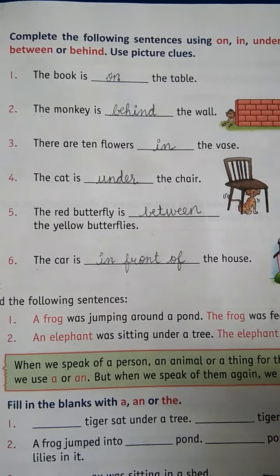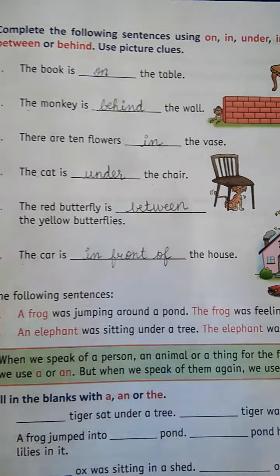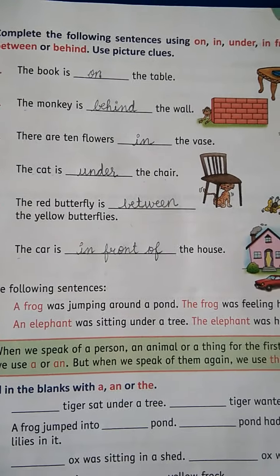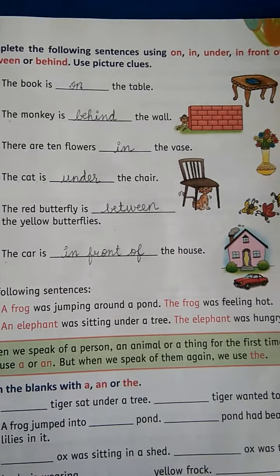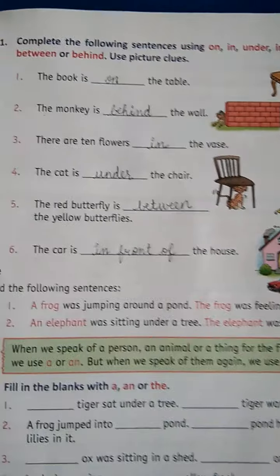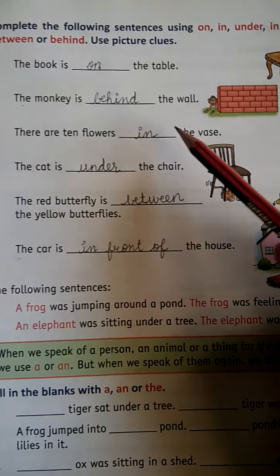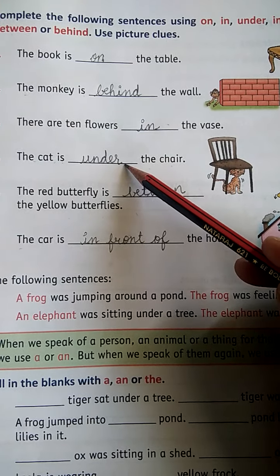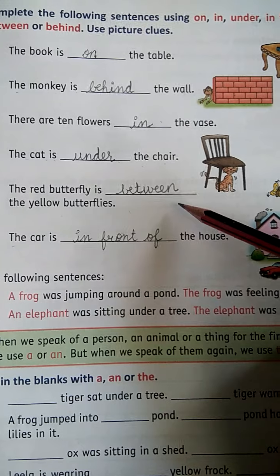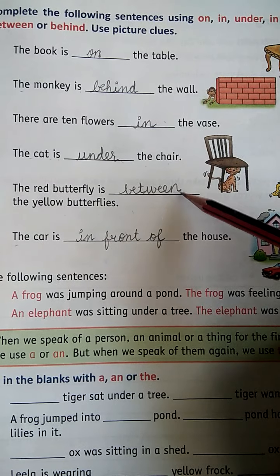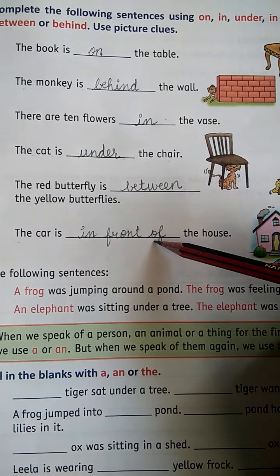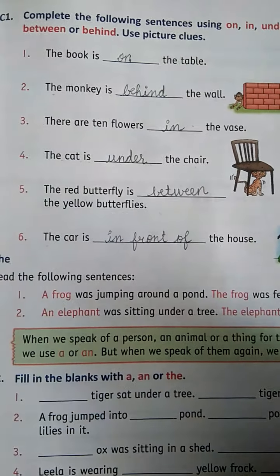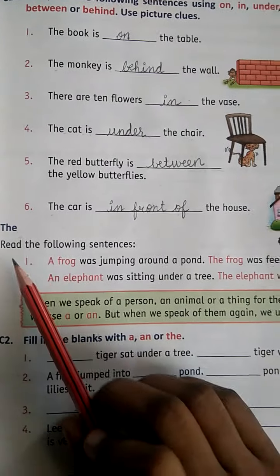I think this exercise is totally clear to you. On means upar. Behind means peechhe. In means andar. Under means neeche. Between means beech mein. Aur in front of means saamne. Okay beta? Next.